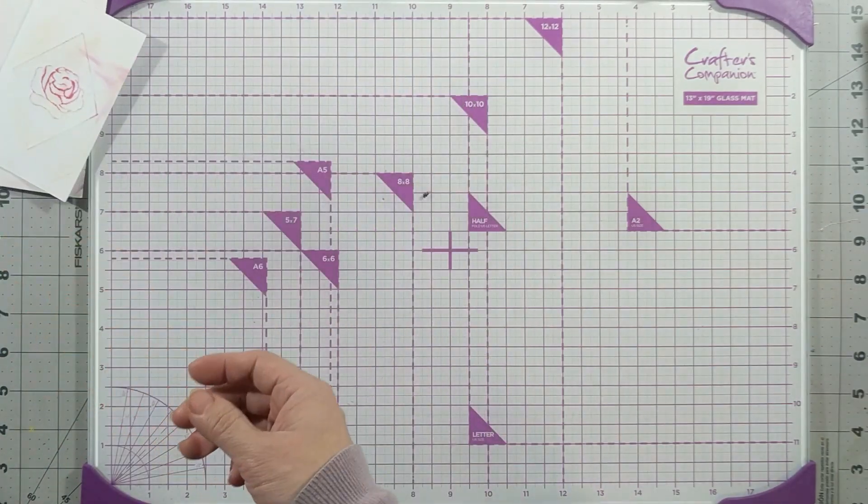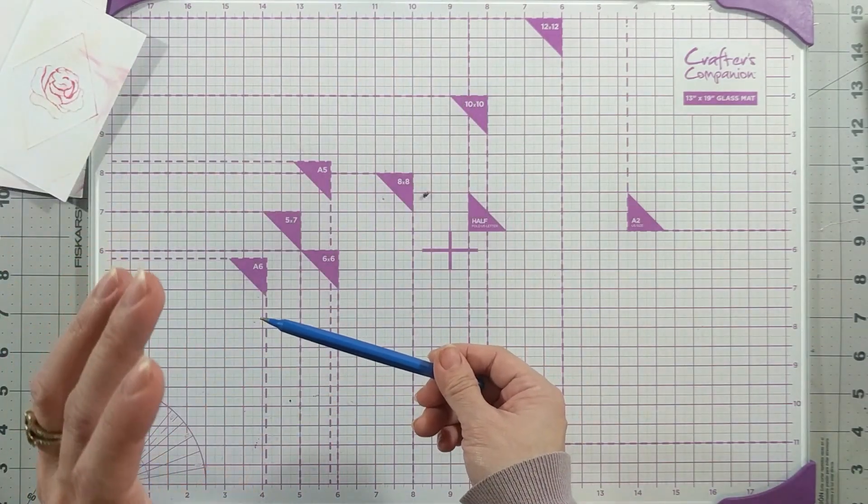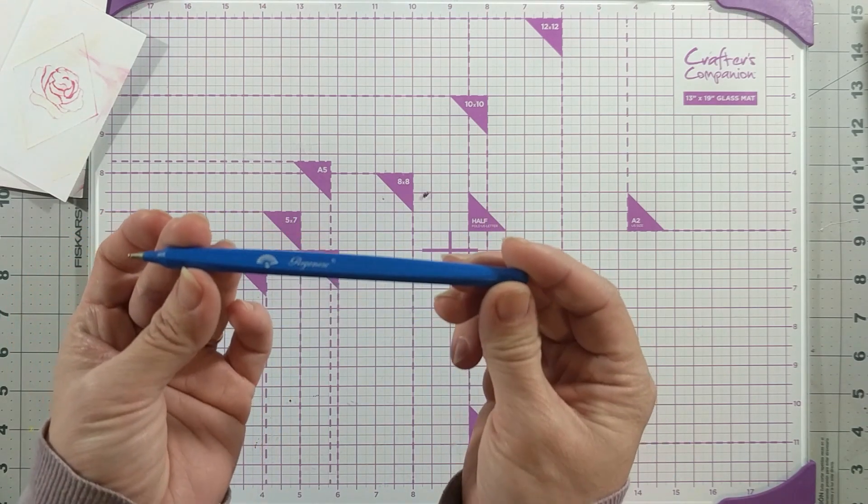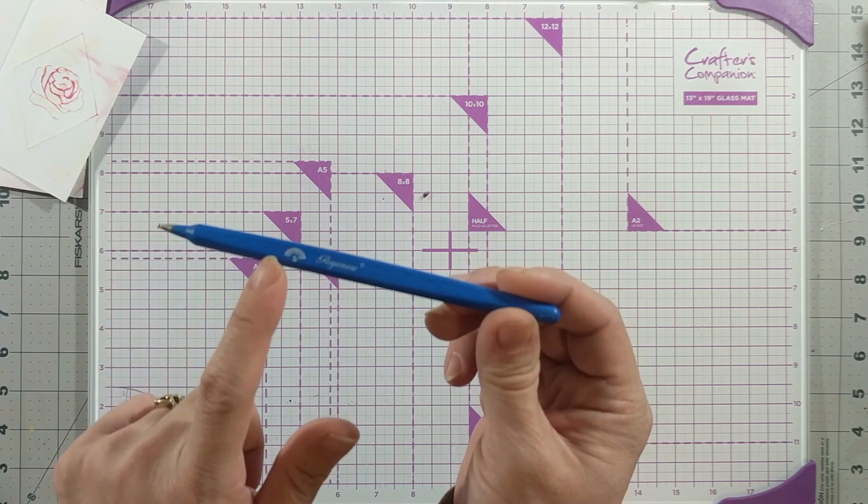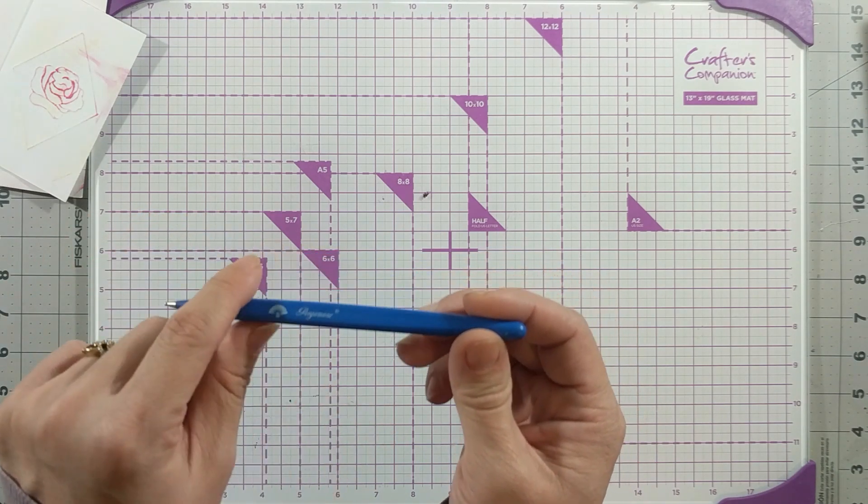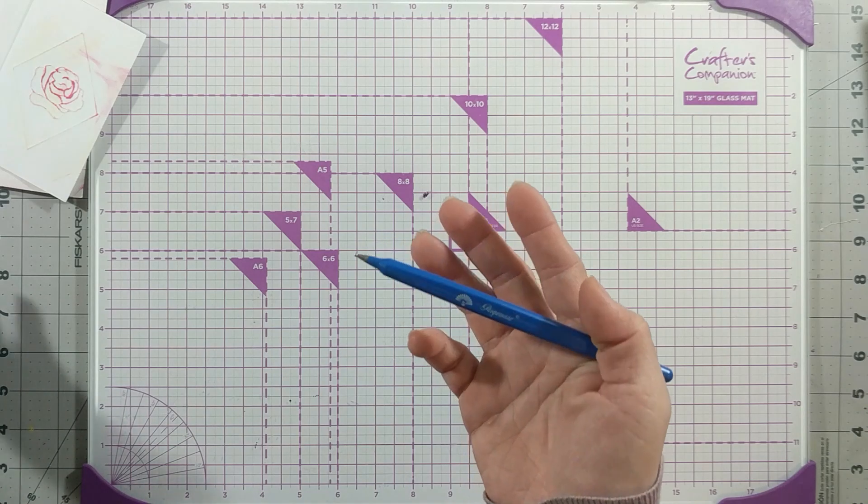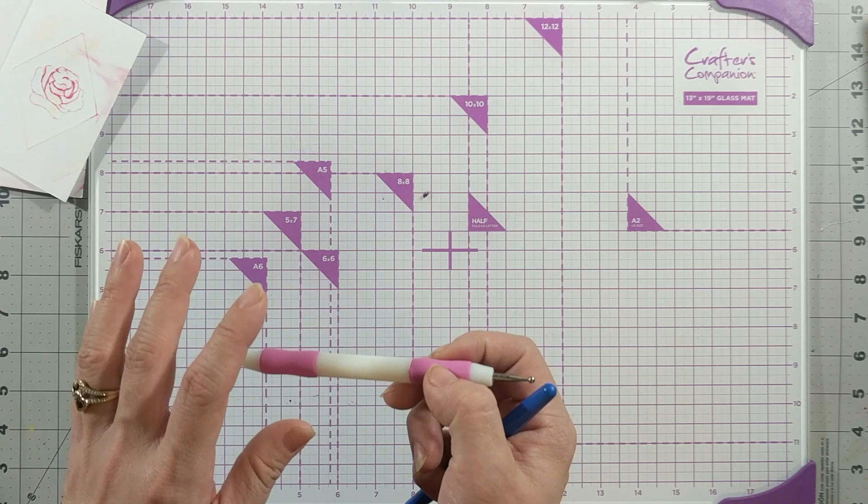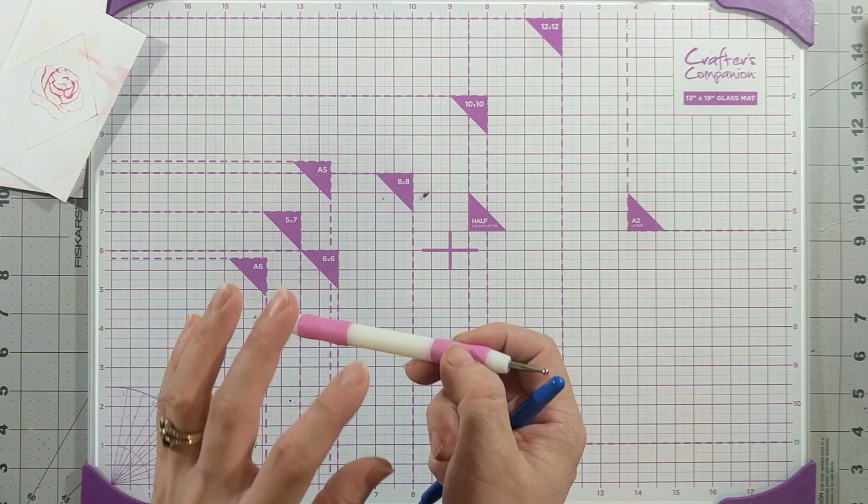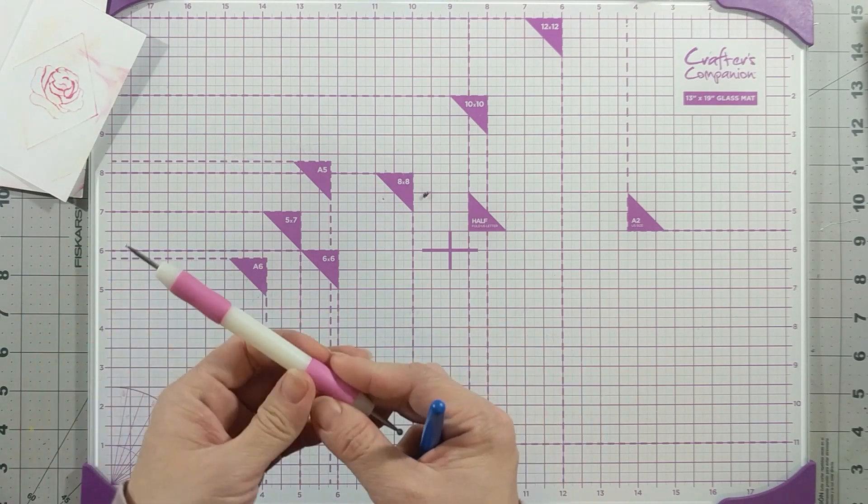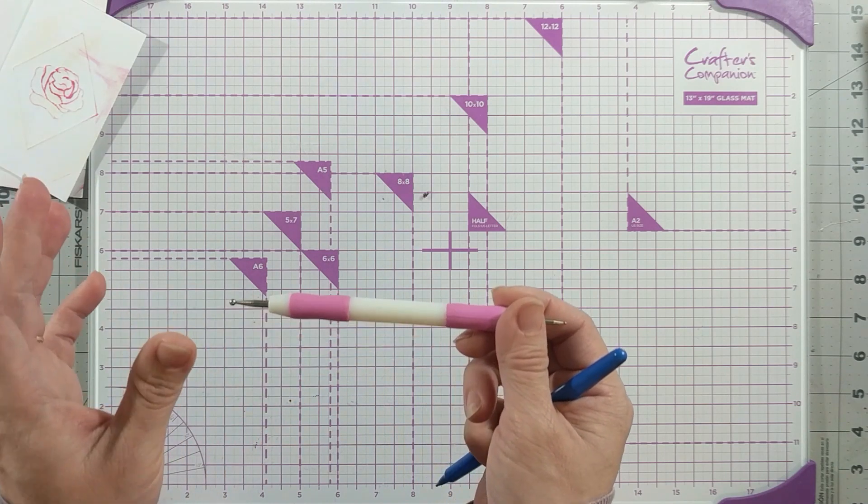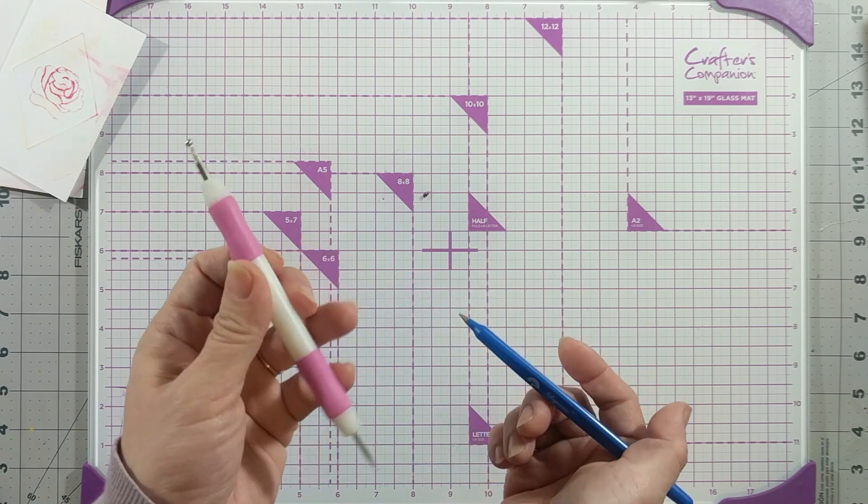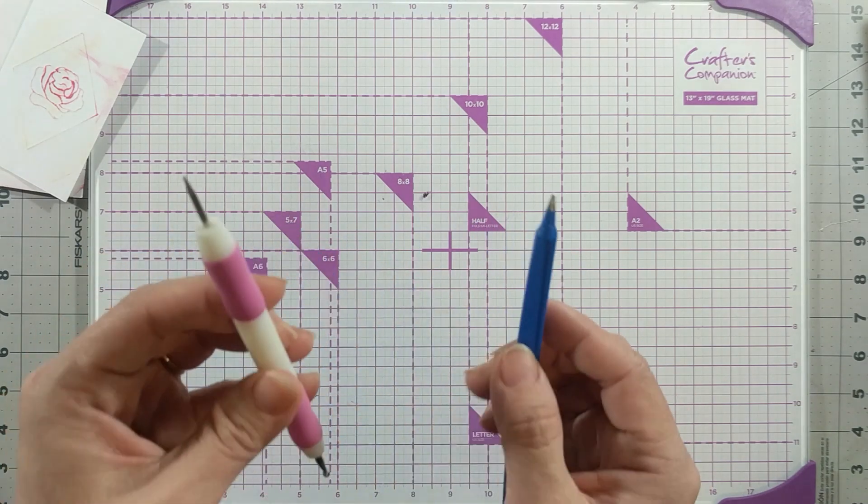All you need to use is a stylus pen. The one that I have here is from Pergamano, from my parchment craft kit. If you don't have it, you can use your pen that's already run out of ink—that will work. Or if you're in the US and you have Dollar Tree around you, you can get this stylus from the dollar store.